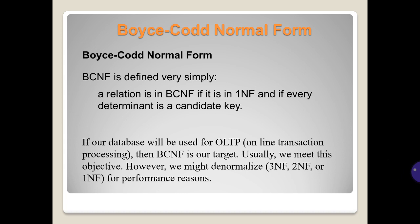Boyce-Codd normal form (BCNF) is defined very simply: a relation is in BCNF if it is in 1NF and every determinant is a candidate key. If our database will be used for OLTP (online transaction processing), then BCNF is our target. Usually we meet this objective; however, we might normalize only to 3NF, 2NF, or 1NF for performance reasons.